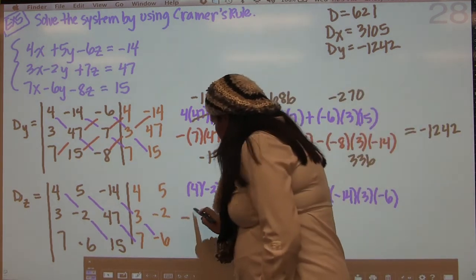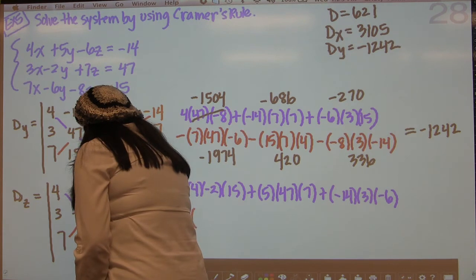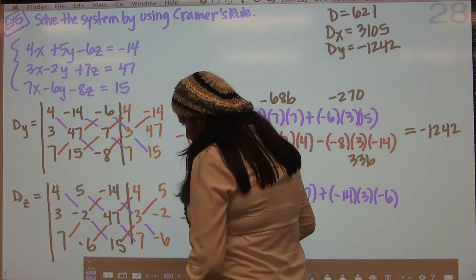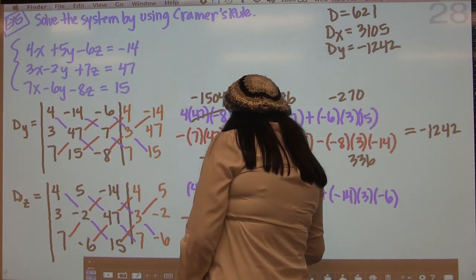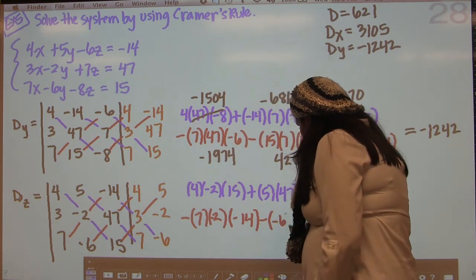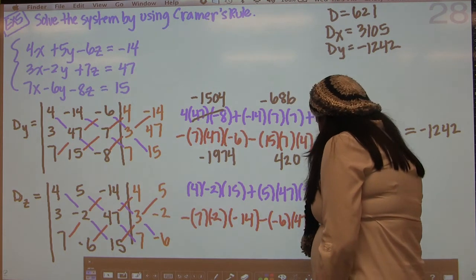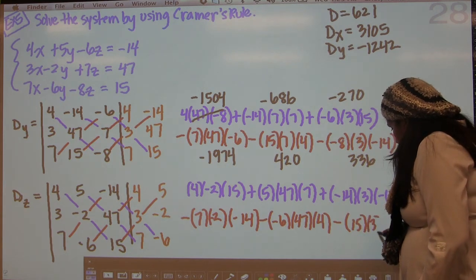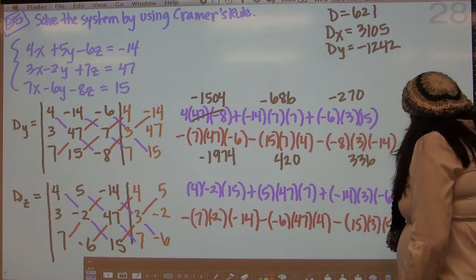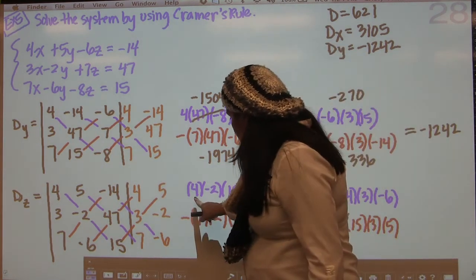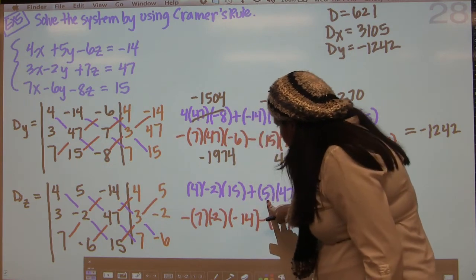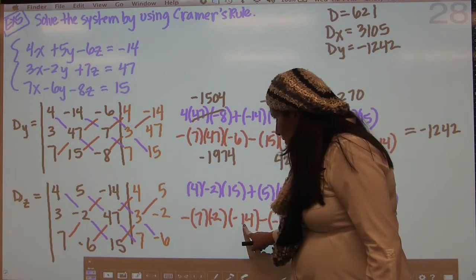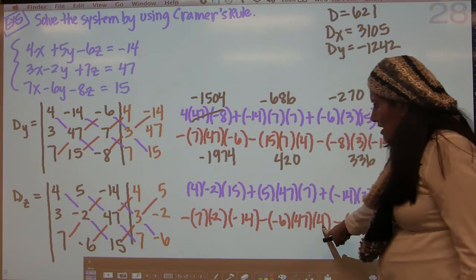And then we'll go backwards with our arrows. So we'll get 7 times negative 2 times negative 14, and negative 6 times 47 times 4, and 15 times 3 times 5. Just double-checking: 4, negative 2, 15; 5, 47, 7; negative 14, 3, negative 6. For the red we've got 7, negative 2, negative 14; negative 6, 47, 4; 15, 3, 5.